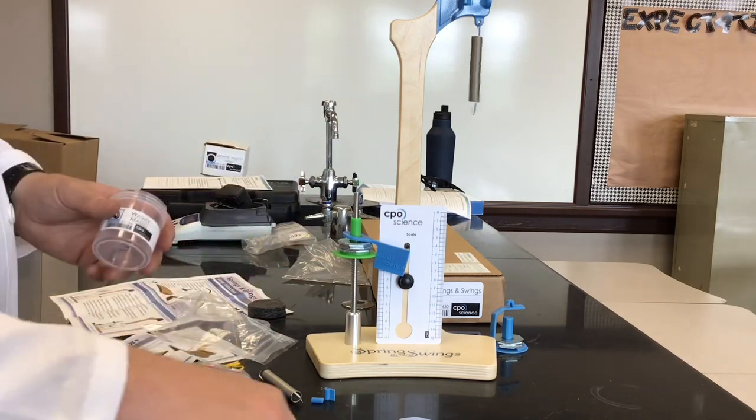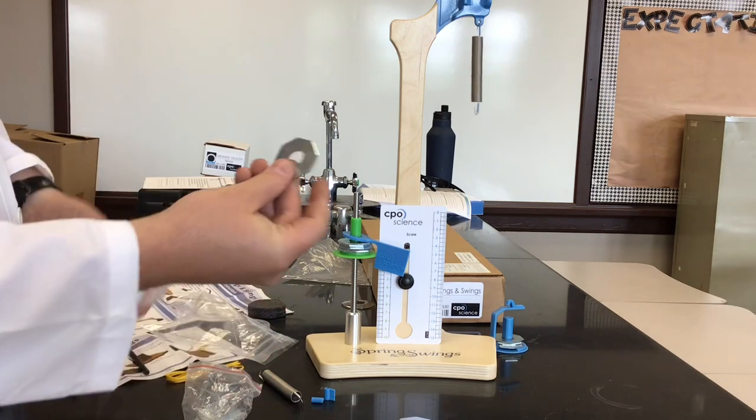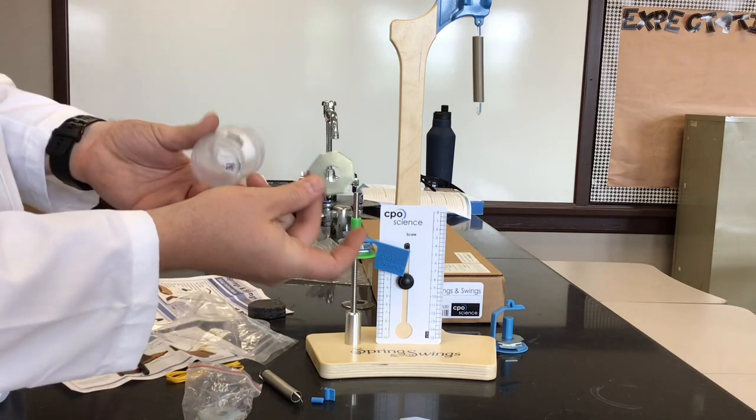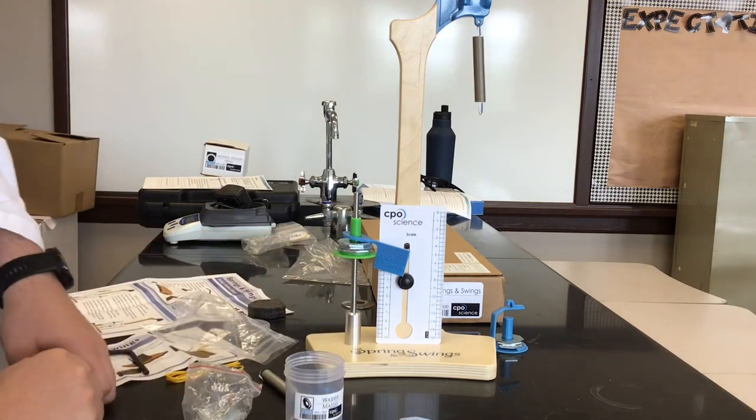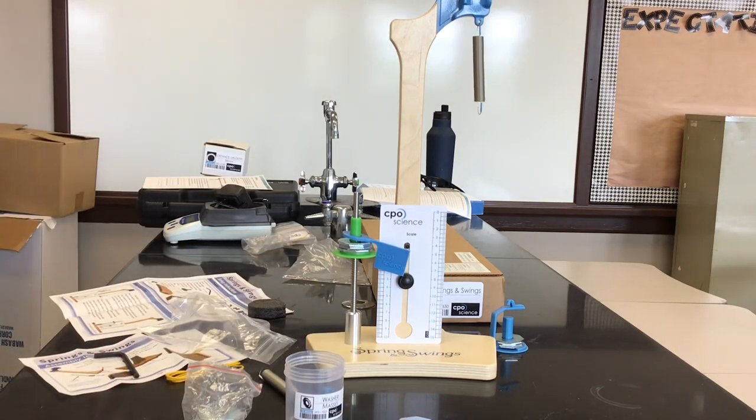All of your washer masses, the hexagonal washers, these came separate, they don't come in the kit, but they are in the CPO stuff. So just look around for those, and that's your weights for this. All right, congratulations, springs and scales.